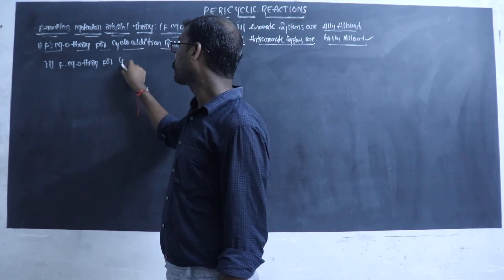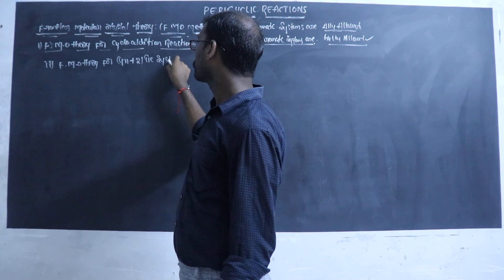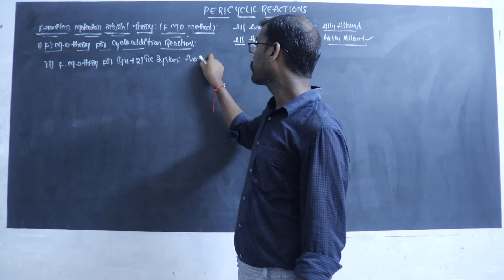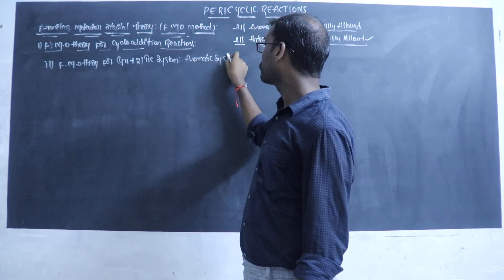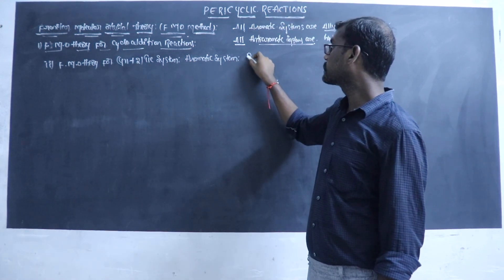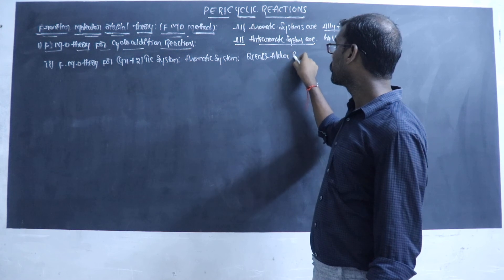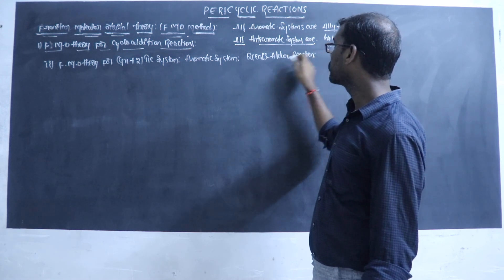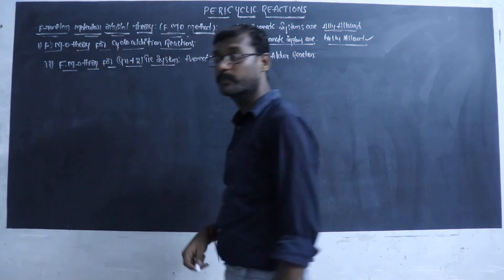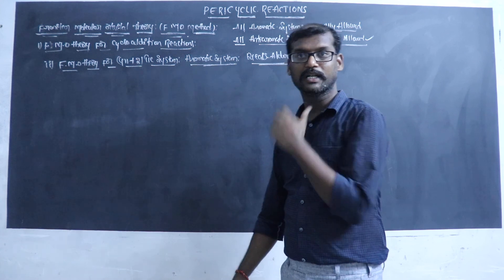The aromatic system follows the 4n+2 pi electron rule. A 4n+2 pi electron system is called an aromatic system. The Diels-Alder reaction involves an aromatic transition state. This is the example of the Diels-Alder reaction which we have done in class.